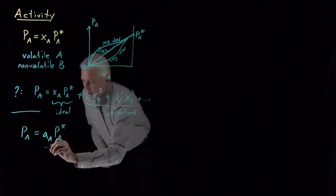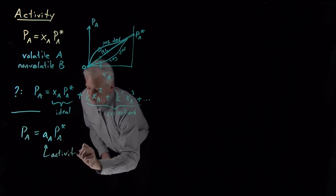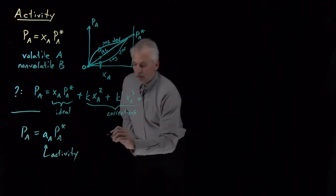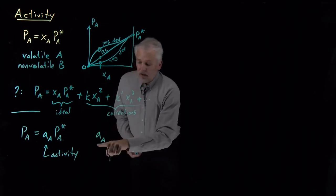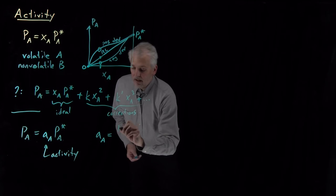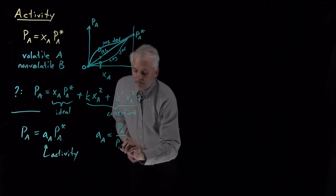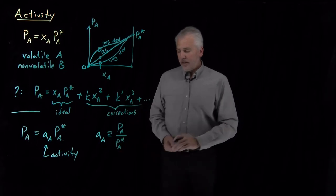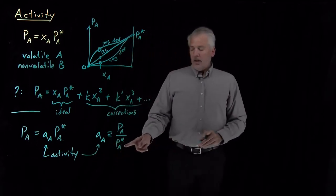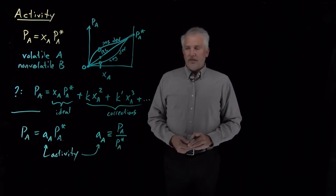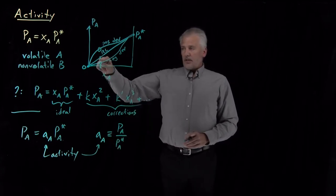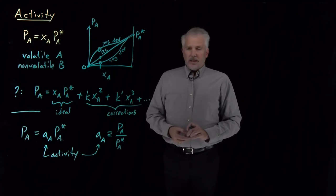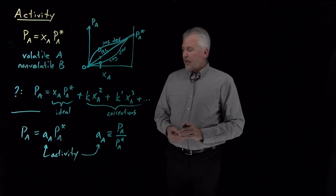That quantity we multiply by is called the activity of the solvent in the solution. The equation is essentially a definition of activity: we define the activity of component A in a solution as the partial pressure of A above that solution divided by its vapor pressure. If we can measure the vapor pressure and the partial pressure, we can calculate the activity, which tells us about the actual partial pressure rather than the Raoult's Law pressure.